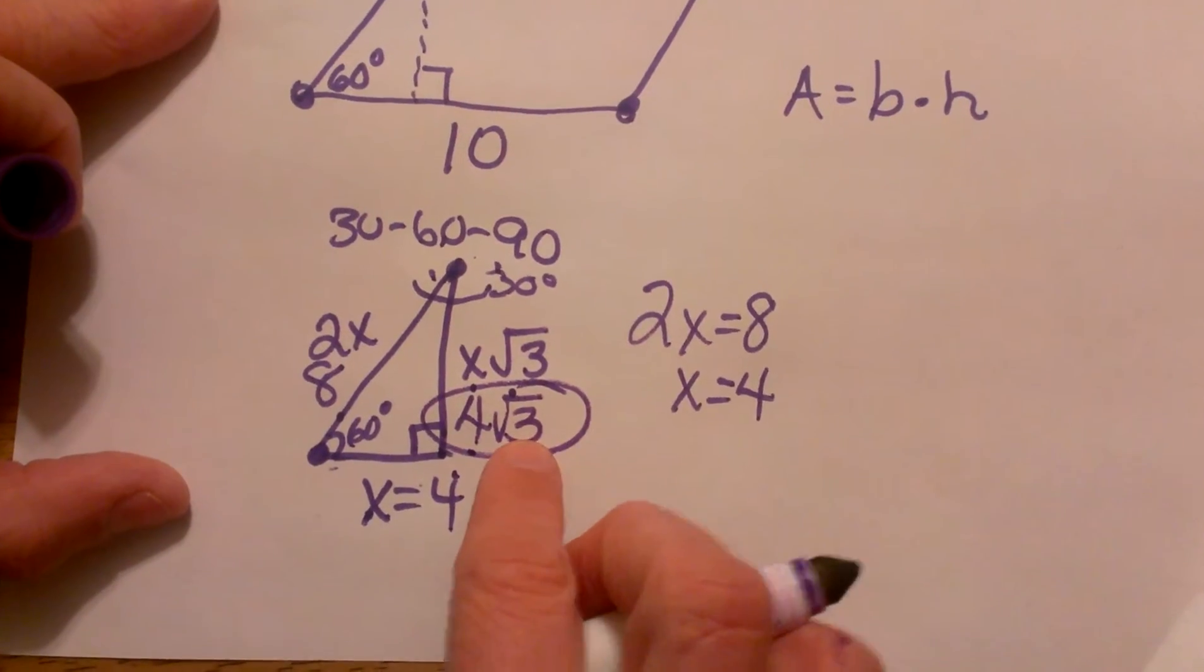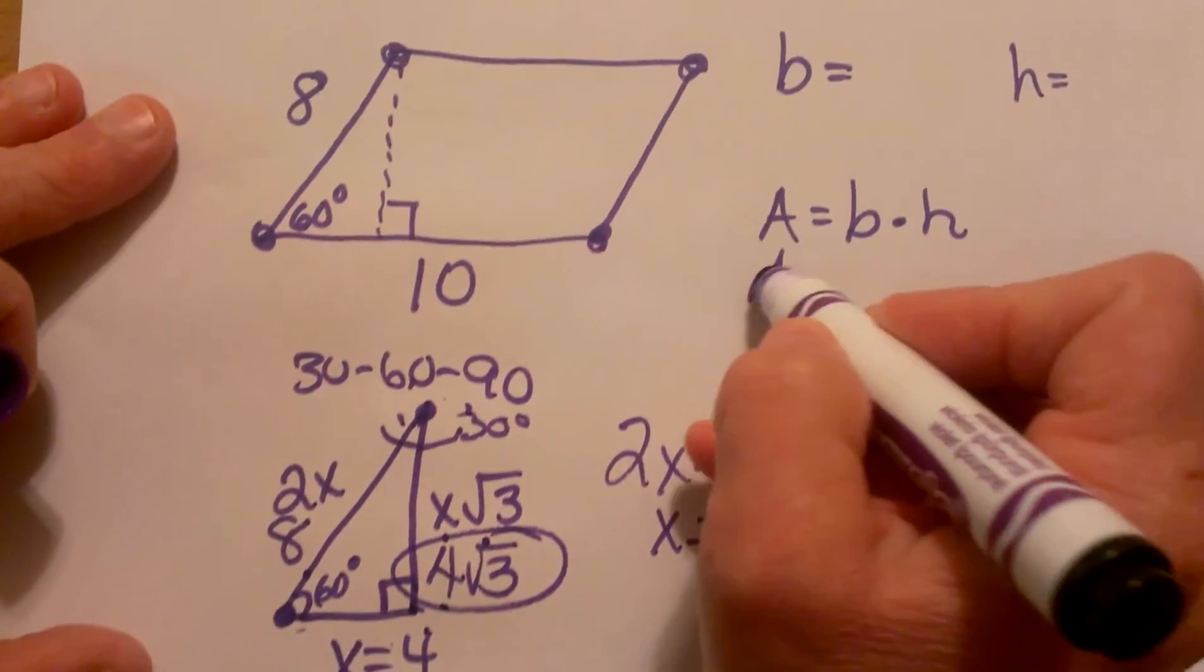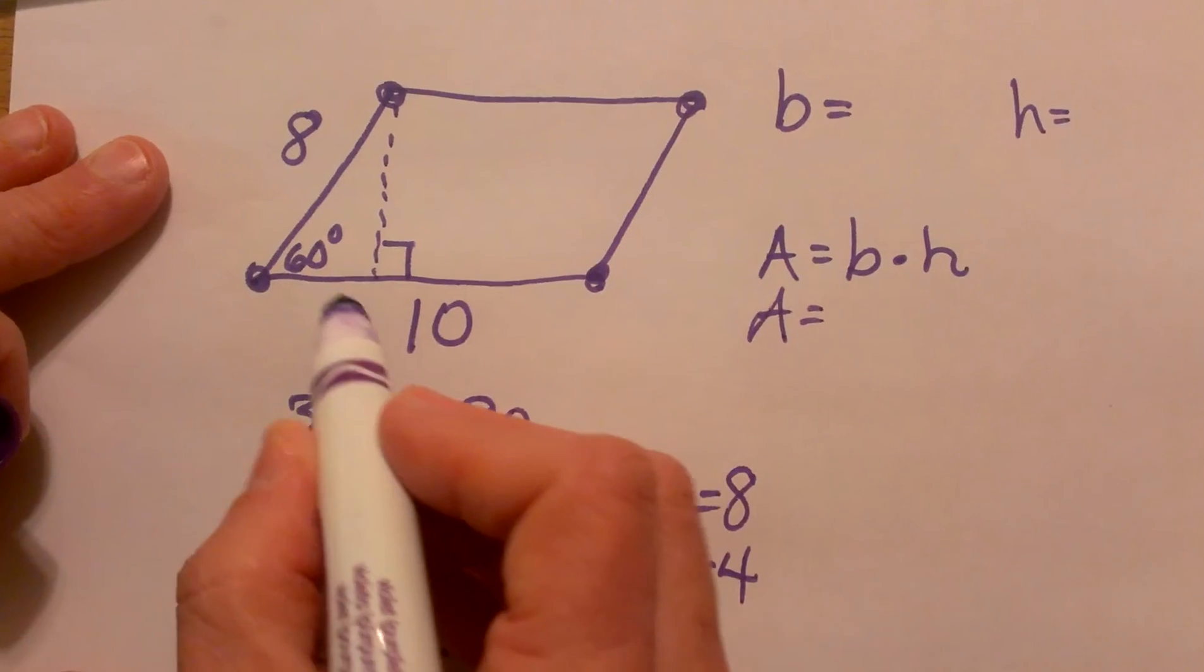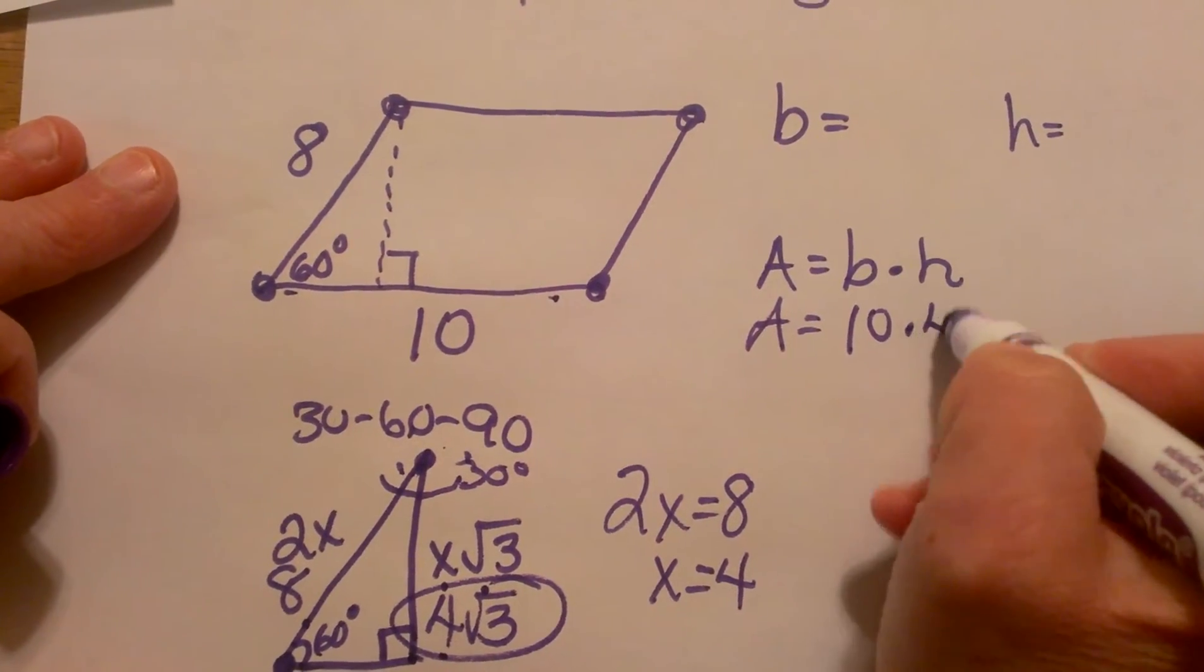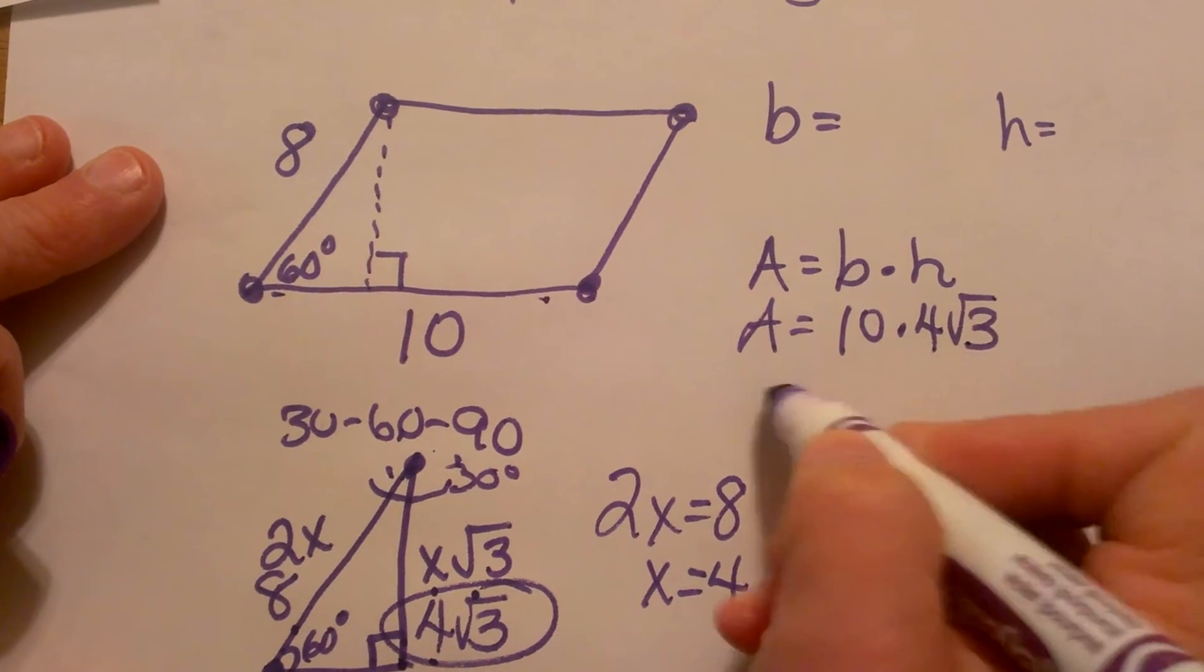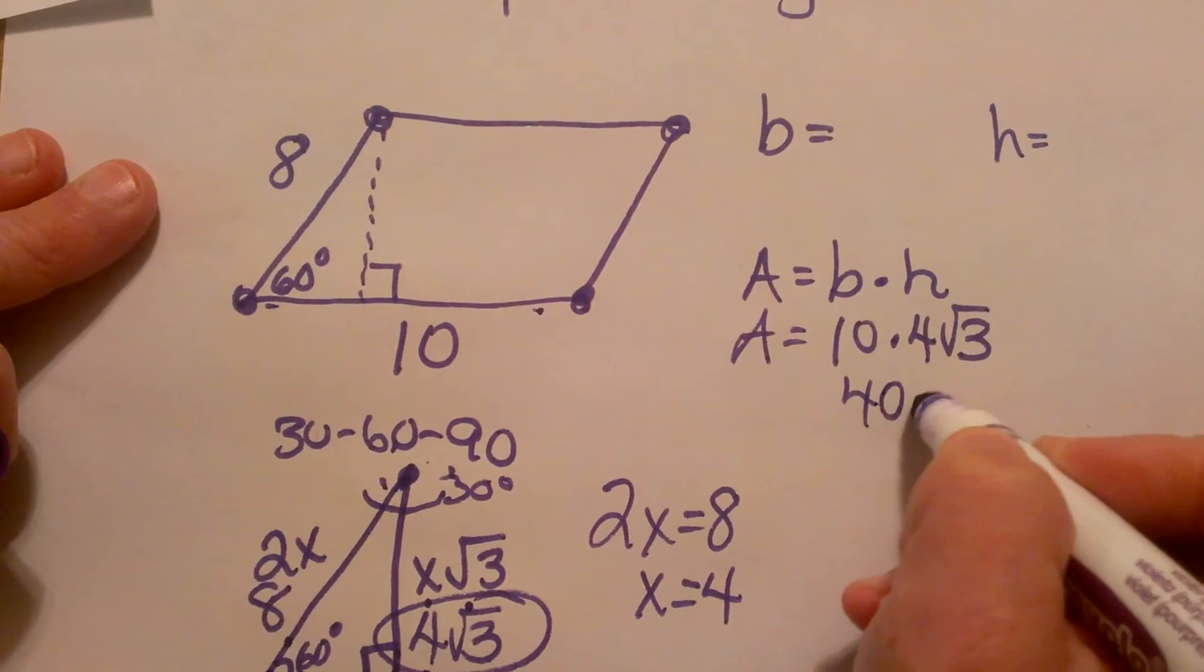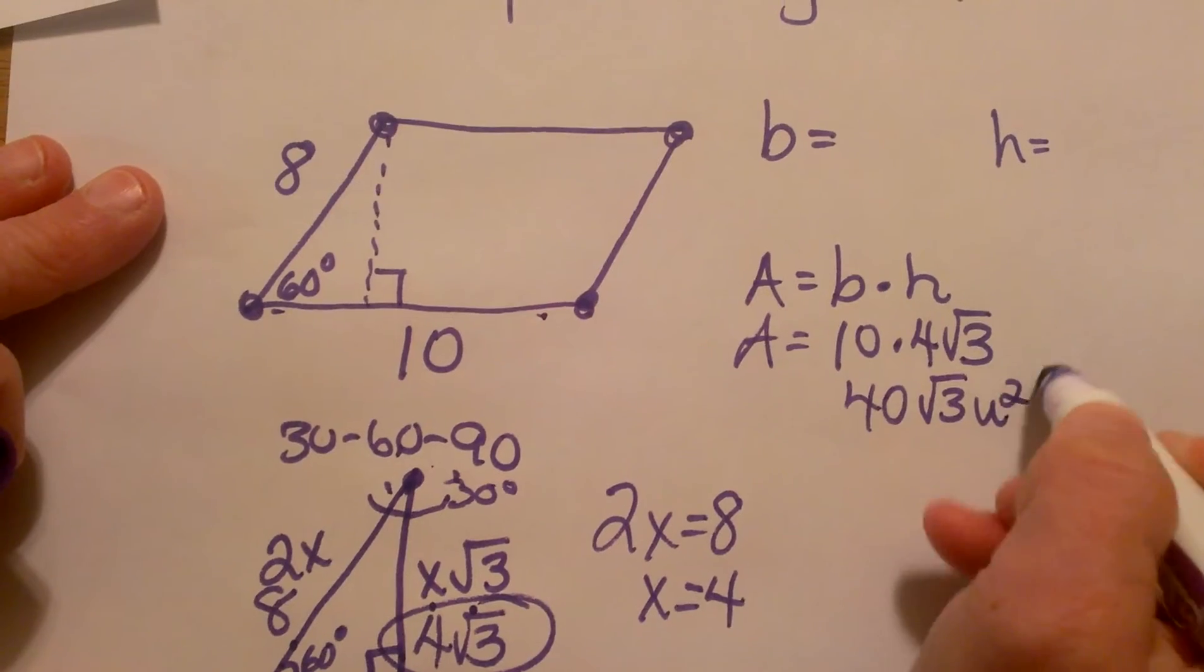Then I can use that to find my area. The area equals the base, which is 10, times the height we just figured out, 4 square root of 3. So the area is 40 square root of 3 square units.